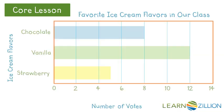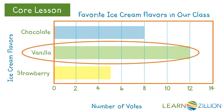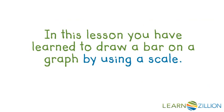So what type of ice cream should your teacher buy? We would pick what most students chose — vanilla. In this lesson you have learned to draw bars on a graph by using a scale, specifically the scale on the y axis, the vertical axis that goes up and down.